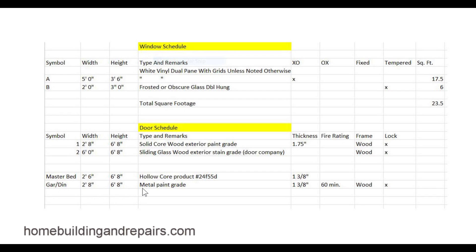This would be the door going into the garage. It's got to be fire rated — a 60-minute fire rating. That's usually common for a garage door where you're coming out of a garage into a livable space. If you just had a garage door going to the outside, it probably doesn't need to be fire rated.